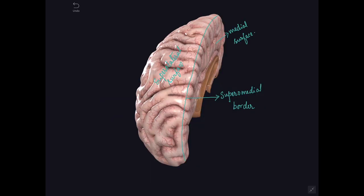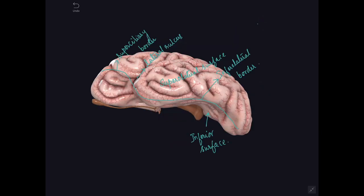Next we will see the borders. The supramedial border lies in between the superolateral surface and the medial surface. Next, the infralateral border separates the superolateral surface and the inferior surface. The part of the infralateral border in front of the lateral sulcus is known as the supraciliary border.